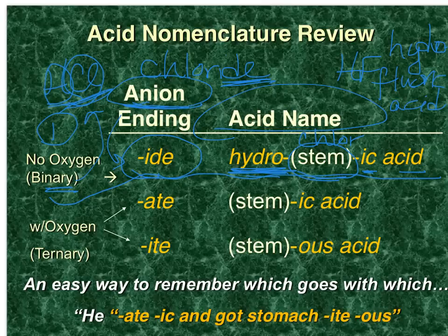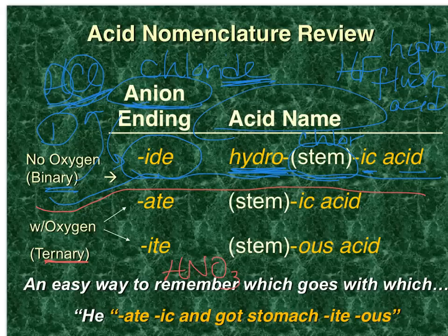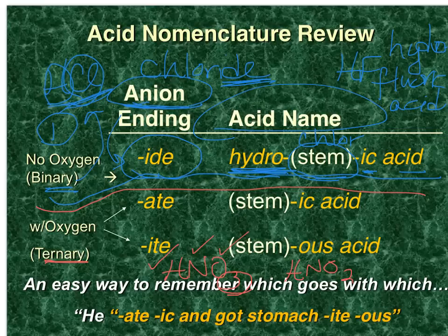Now we'll go on to the slightly more complicated ternary acids. Those are acids that contain three different types of elements — for example, nitric acid or nitrous acid. This example is made up of hydrogen, nitrogen, and oxygens. We're not talking about how many of each atom there are, just the fact that there are three different types of atoms makes it a ternary.